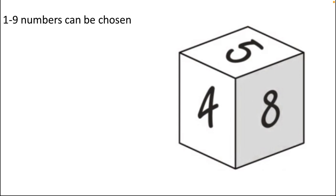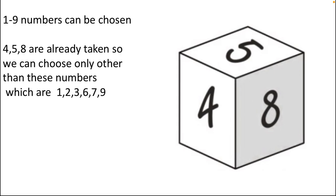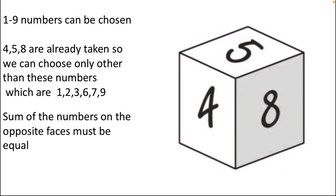Numbers from one to nine can be chosen. Four, five, and eight are already taken, so we can choose only from the remaining: one, two, three, six, seven, and nine. The sum of numbers on opposite faces must be equal — so five plus its opposite number must equal the same sum S as eight plus its opposite number, and four plus its opposite number.